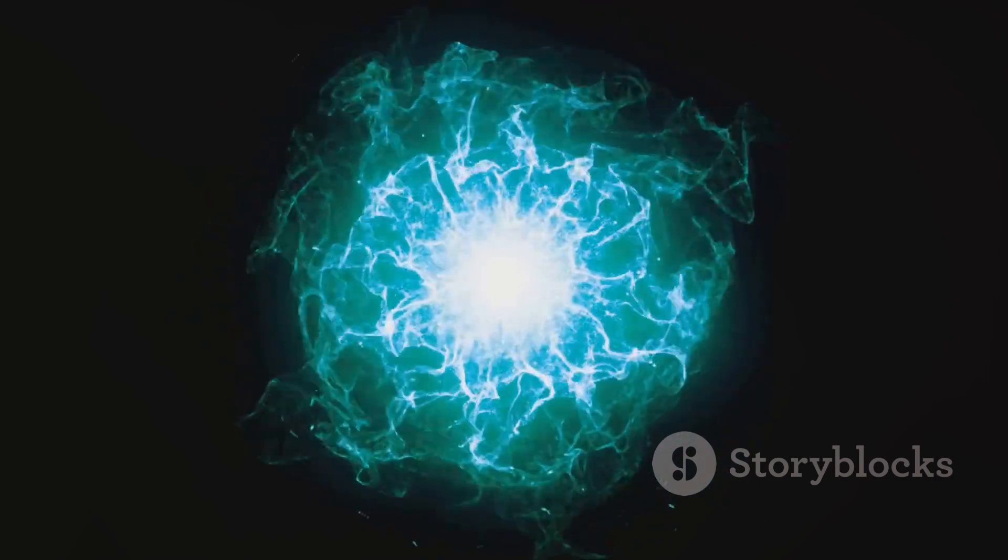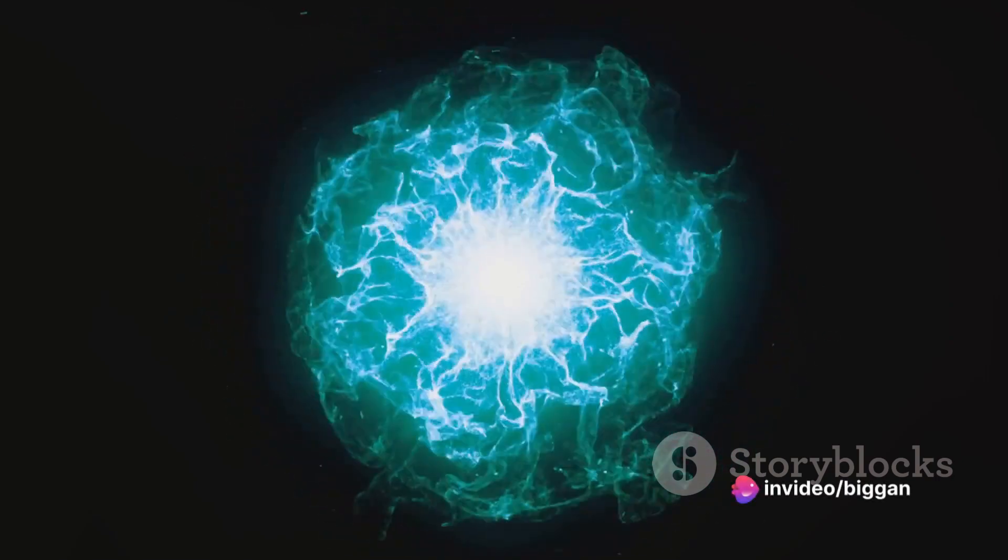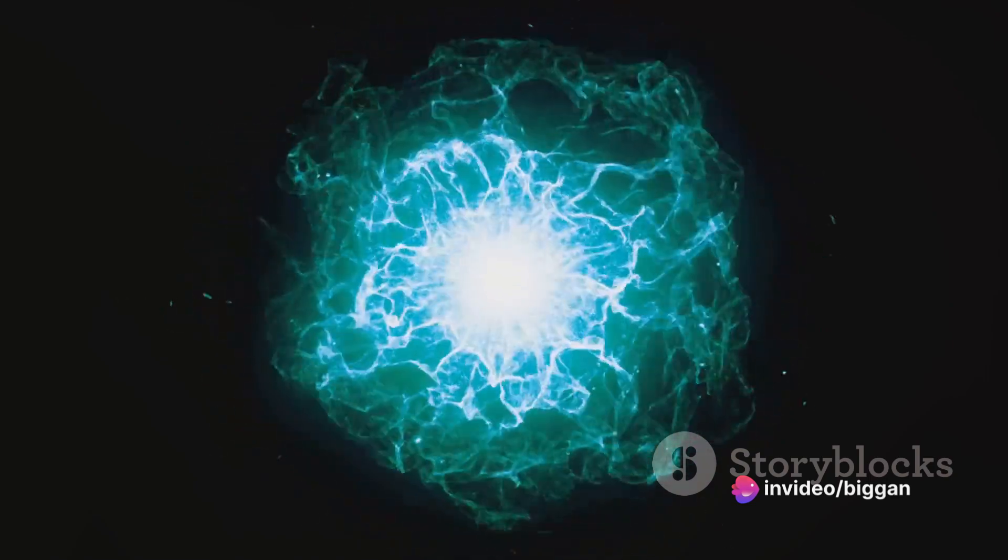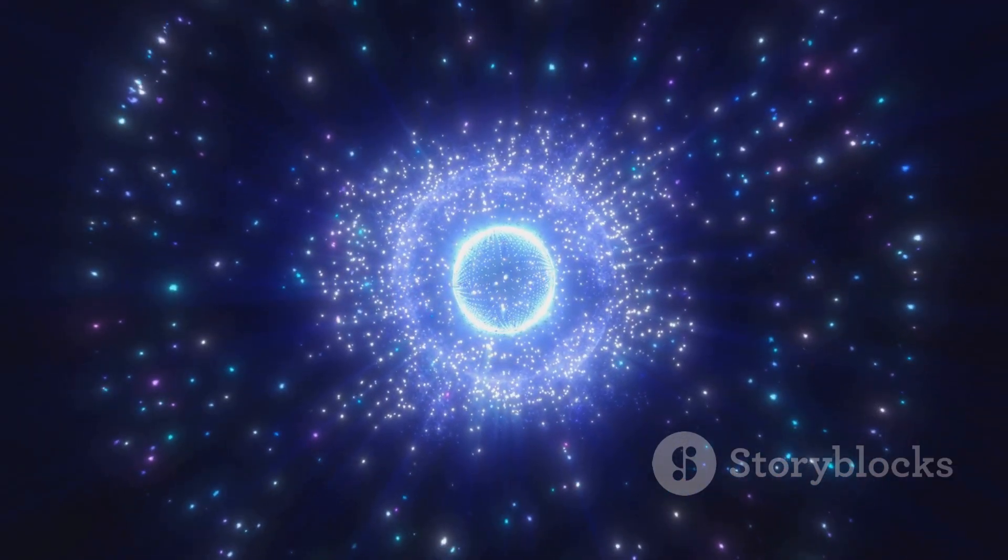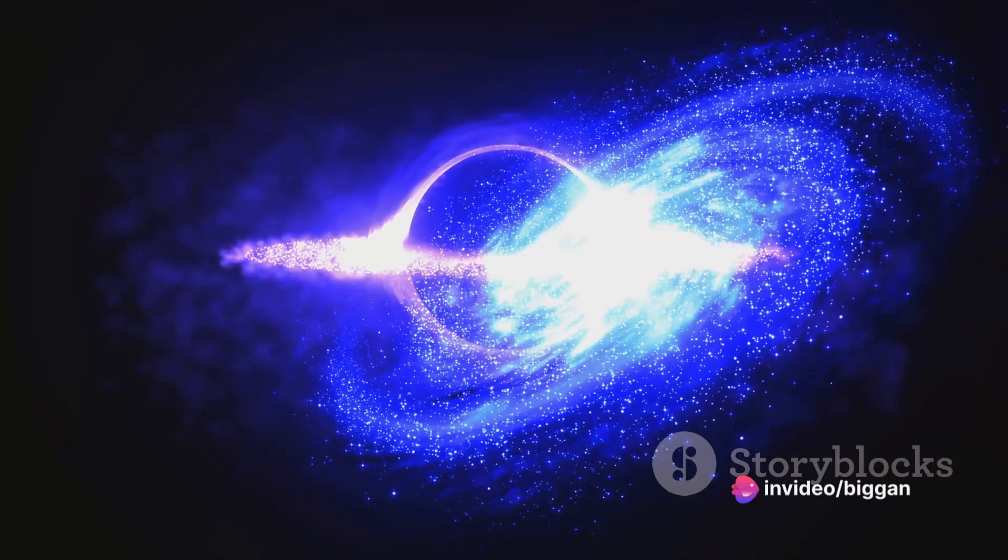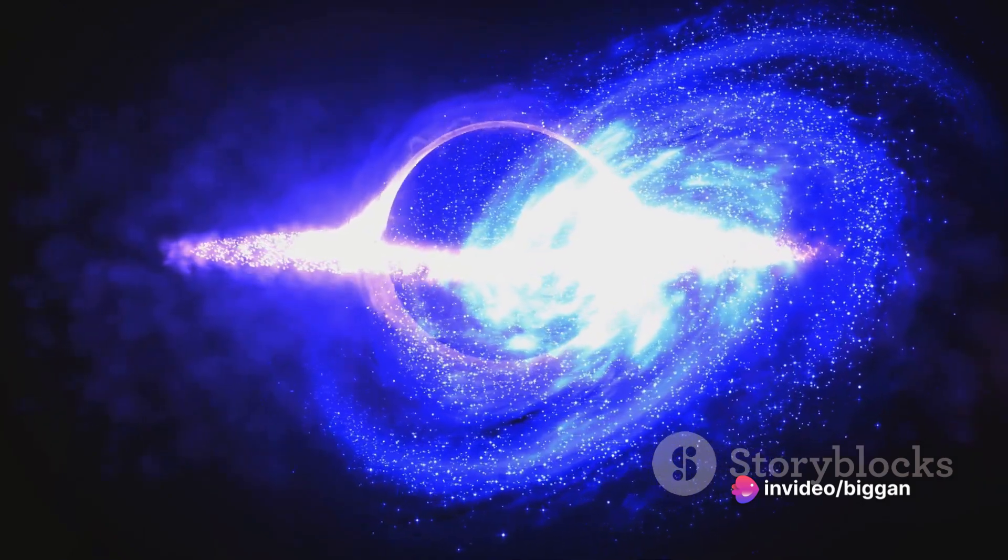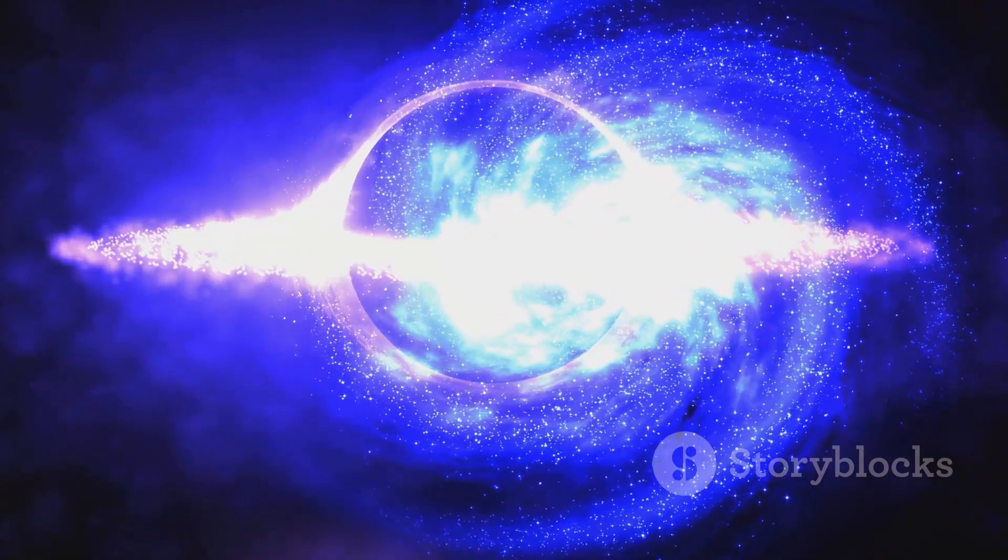Imagine you're walking through a room filled with invisible molasses. The more you interact with this molasses, the slower you move, and the more effort it takes to move around. This is somewhat similar to how particles interact with the Higgs field. Now the Higgs boson is like a tiny droplet of this invisible molasses. It's a type of particle in the standard model of particle physics. The standard model is a theory that describes three of the four known fundamental forces in the universe as well as classifying all known elementary particles.